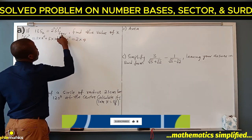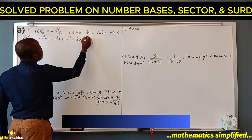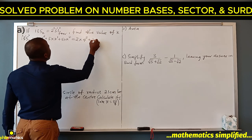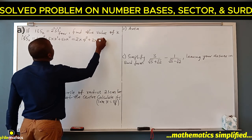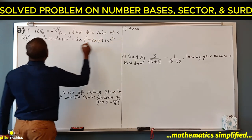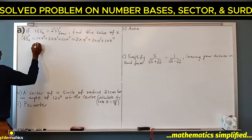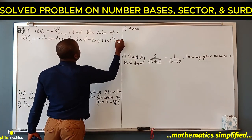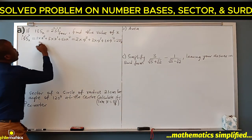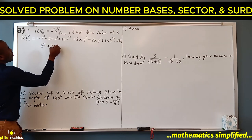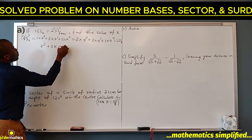231 base 4 converts as: 2 times 4 squared plus 3 times 4 to the power 1 plus 1 times 4 to the power 0. So on the left side we have k squared plus 3k plus 5.